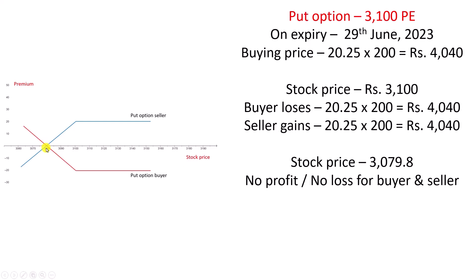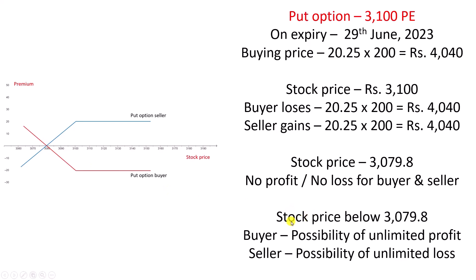Second condition: on expiry, stock price reaches 3079.8 rupees. If it reaches this point, no profit, no loss for buyer and seller — both will be at a no profit, no loss situation. Once the stock starts to move below this value, the possibility of profit for option buyer is unlimited and the possibility of loss for seller is unlimited, because it can go down drastically. We do not know how much it will go down — possibility of unlimited profit for buyer and unlimited loss for seller.